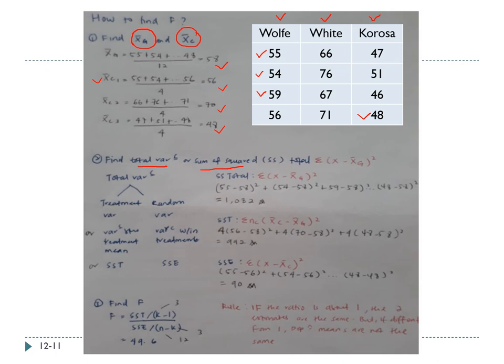For Wolf's component mean: 55 + 54 + 59 + 56 divided by 4 gives 56. Step two: find the total variance, also called SS Total. Total variance can be divided into two components: treatment variance (variance between treatments) and random variance (variance within treatments, or sum squared error). Treatment variance plus random variance equals total variance, so if given two of the three, you can compute the third.